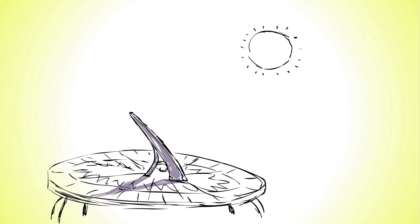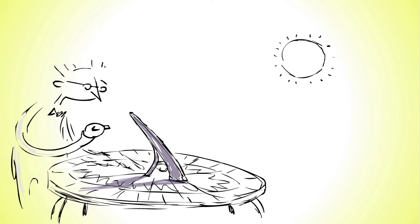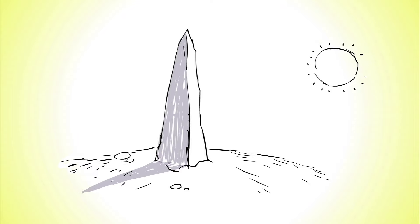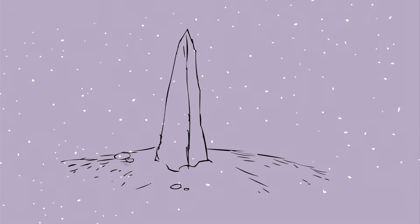A well-constructed sundial can measure time with remarkable accuracy, and sundials were used to monitor the performance of clocks until the modern era. But sundials have their limitations too. Obviously, they require the sun to shine, so they don't work at all during the night when it's dark.